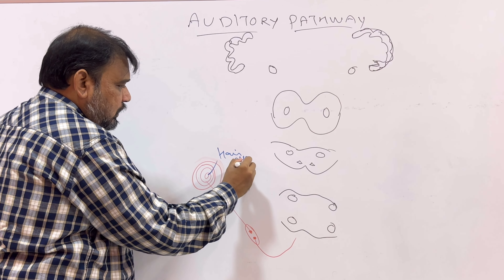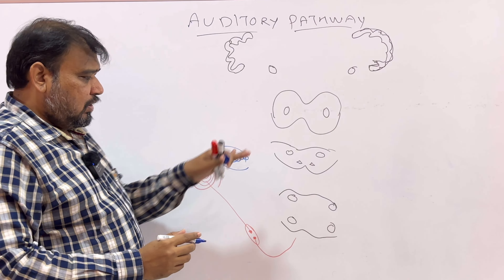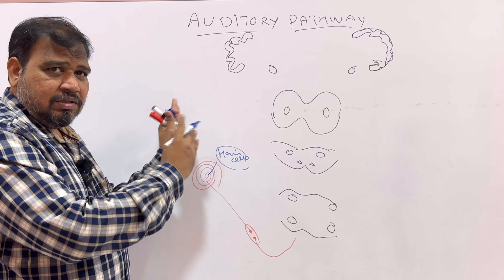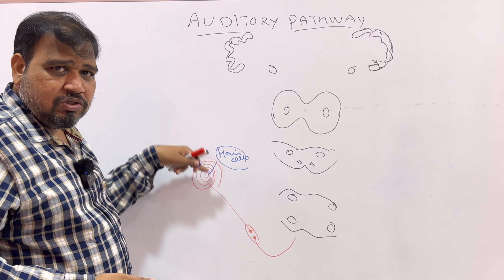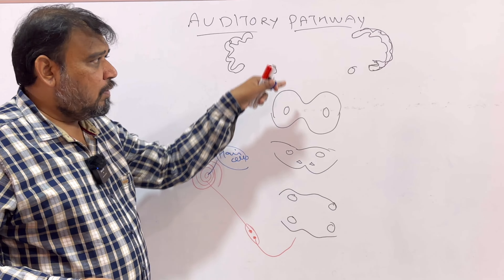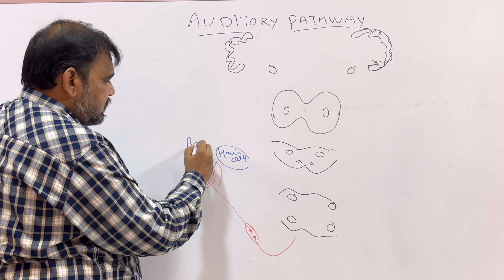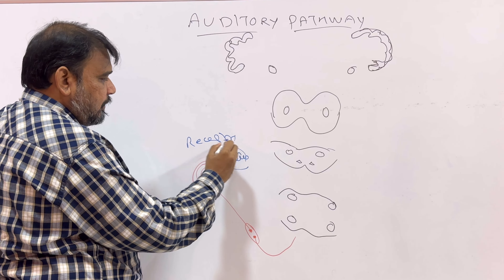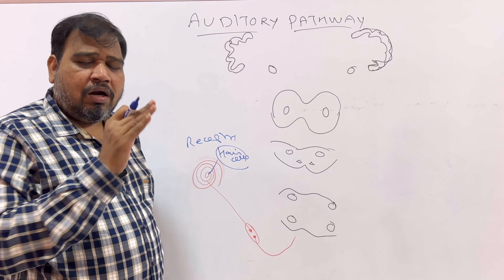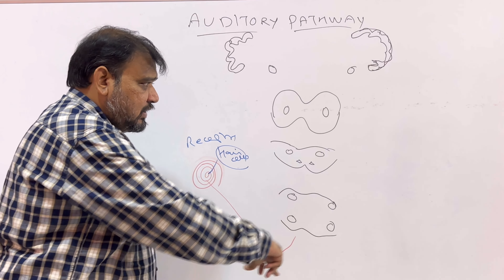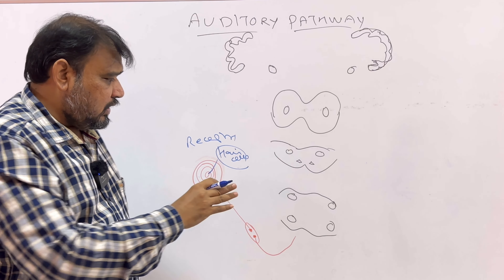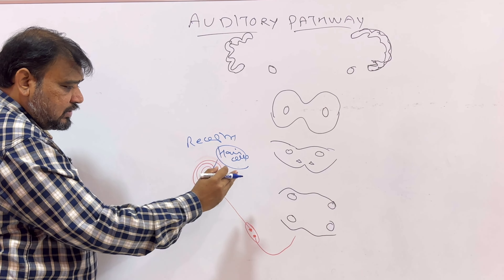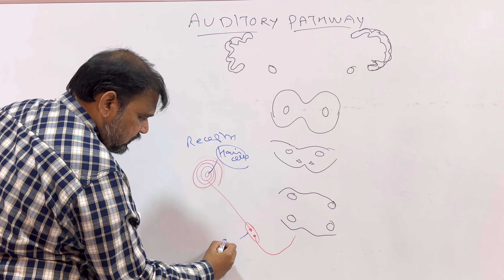Now we are going to discuss the action potential which is caused because of the tilt of the hair cells. The hair cells are present and we consider them as receptors for hearing. In the auditory pathway, I am starting with the organ of Corti hair cells that bend, which causes the action potential. This pathway obviously ends in the auditory cortex. Auditory pathway is a sensory pathway, not a motor pathway, and it is ascending.